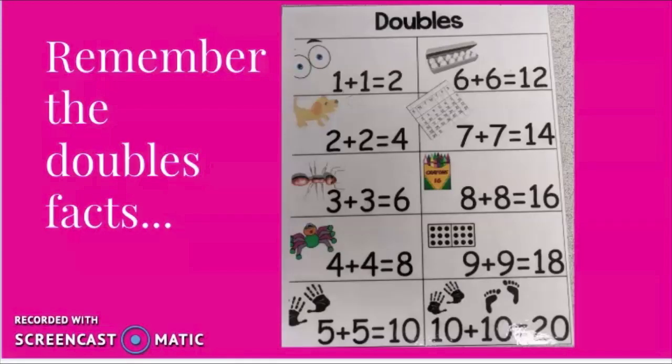First, you need to remember the doubles facts. So remember one plus one is two, two plus two is four, three plus three is six, four plus four is eight, five plus five is ten, six plus six is twelve, seven plus seven is fourteen, eight plus eight is sixteen, nine plus nine is eighteen, and ten plus ten is twenty.